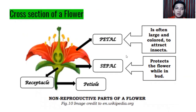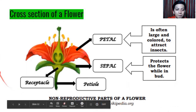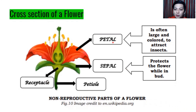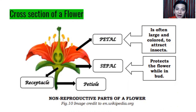In the cross-section of the gumamela flower, we can see the non-reproductive parts: the receptacle, the petiole, the sepal, and the petals. Petals are often large and colored to attract insects — the brighter and more colorful the flower, the better its chances of attracting insects. The purpose of this is to undergo the process of reproduction, because without pollinators and insects, they will never reproduce. The sepal protects the flower while it is in the bud.